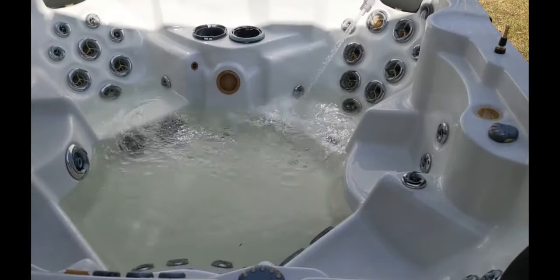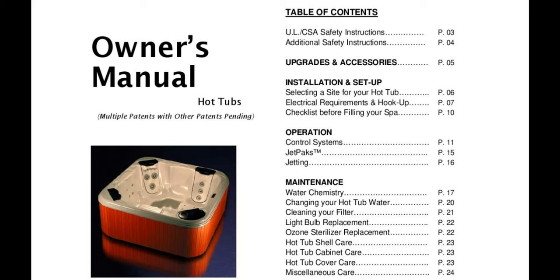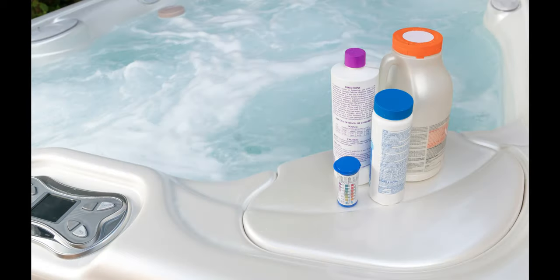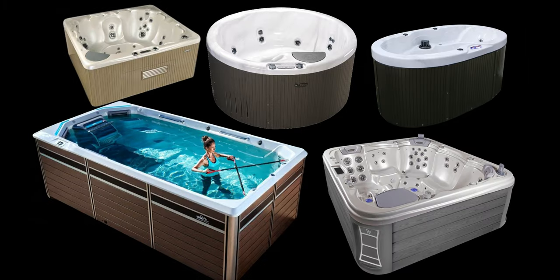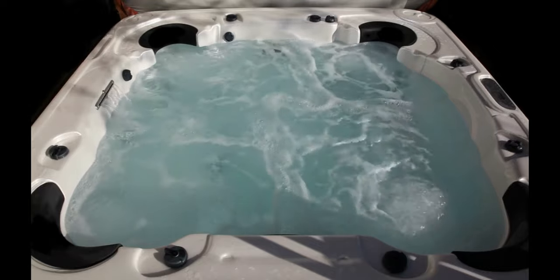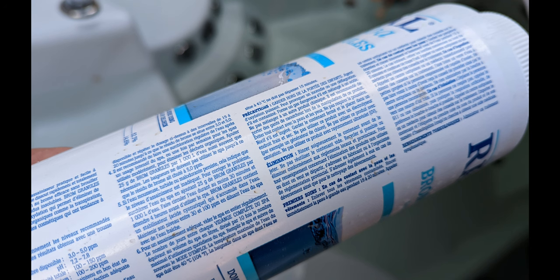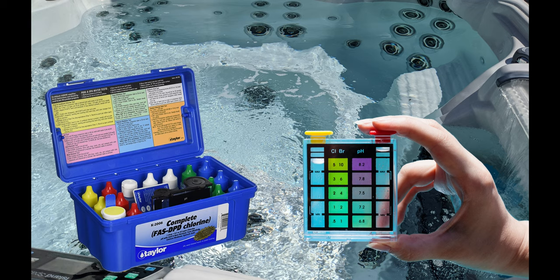First, we need to fill the tub. If you need help, you can check out our video above where we walk through the initial fill-up process. You can also find this information in your hot tub owner's manual. Once we fill the hot tub, now it's time to check the chemical level. It's important to note the quantities to apply can vary based on the size of your hot tub and the chemical concentration of the brand or product being used. You should know how many gallons of water your hot tub holds.